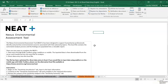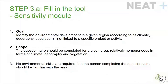Now let's get down to business and look in detail at the sensitivity module. This module has one main objective: to identify the environmental risks present in a given region. It is a general analysis not linked to a specific activity or project. When filling in this module, it is important to choose the scope of the study — you want to choose an area that is relatively homogeneous in terms of climate, geography, and vegetation.